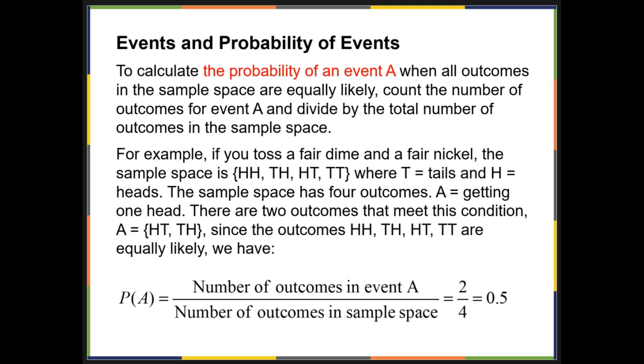In this example, it says you've got a dime and a nickel, and you are looking for the two outcomes to meet: the dime has heads, the nickel has tails, or the dime has tails and the nickel has heads. So you're trying to get one head, and there's two of those out of four total options, and you get 0.5 as the probability.